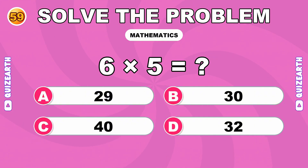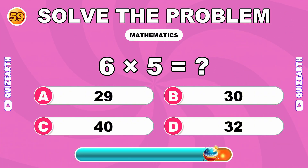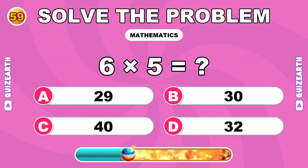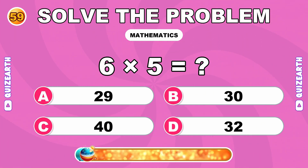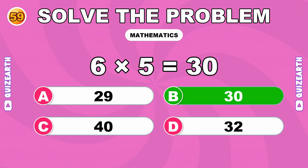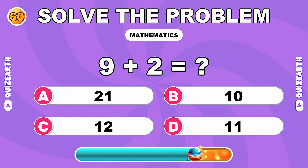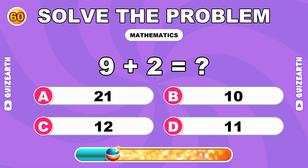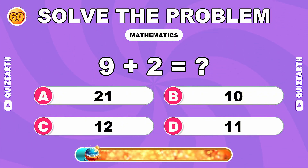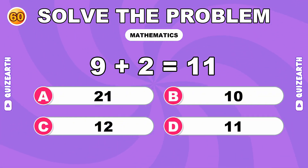How much is 6 times 5? So close. The answer is 30. What do you get when you add 9 and 2? Final question — bring it home. The answer is 11.